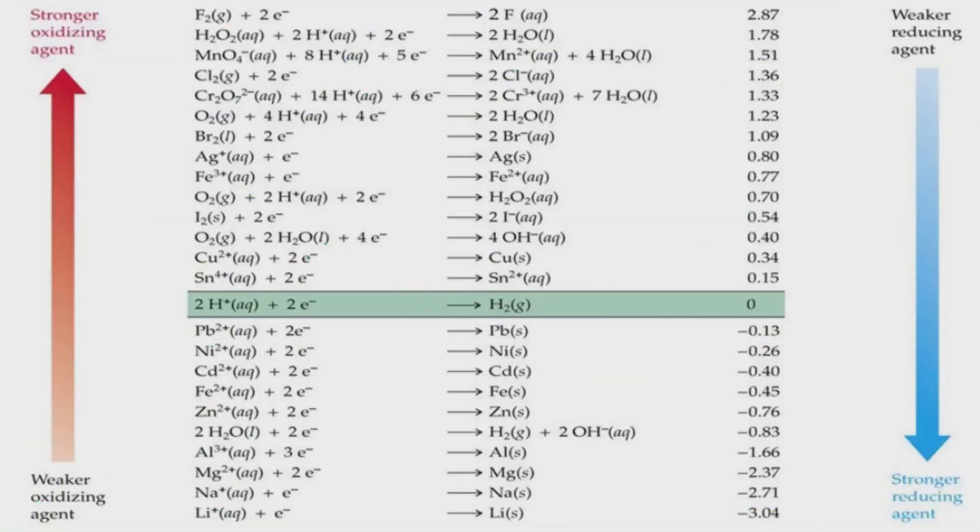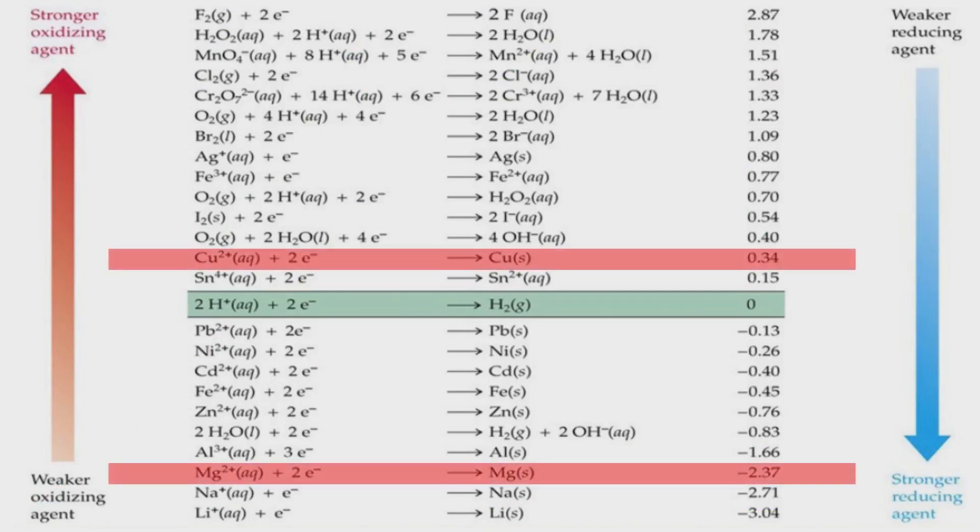According to standard reduction potential table, you need to take a look at the values you have for the standard reduction potential. Magnesium has a higher reduction potential so it oxidizes. Copper has a lower reduction potential so it reduces.